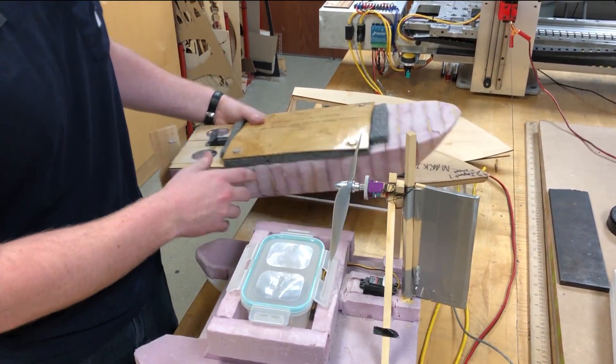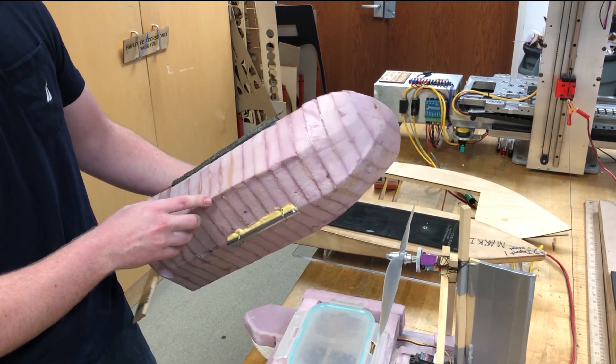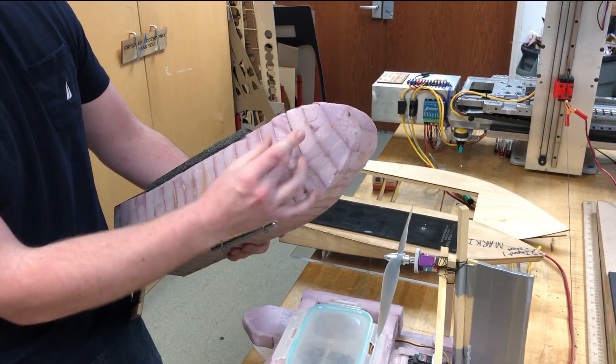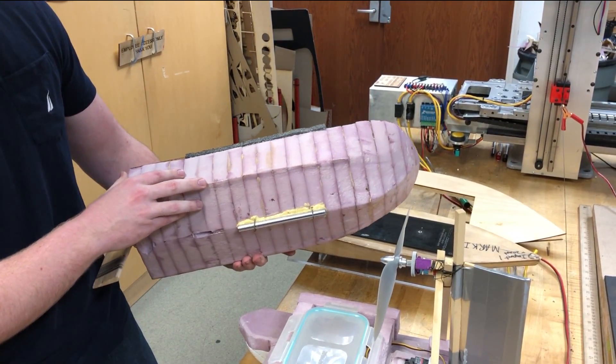This is another foam boat here. This is a more traditional design. This one was done by cutting out individual segments in different shapes and then gluing them together and sanding it to make that contour.